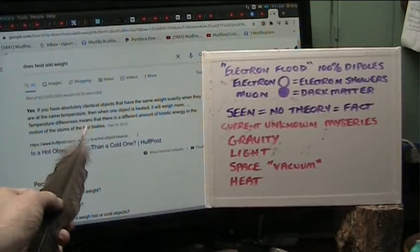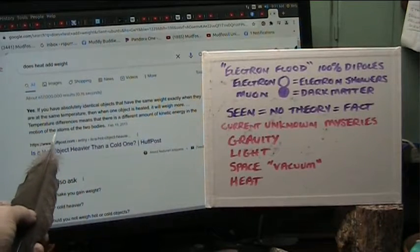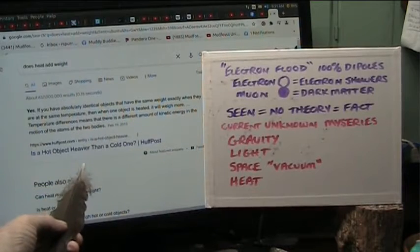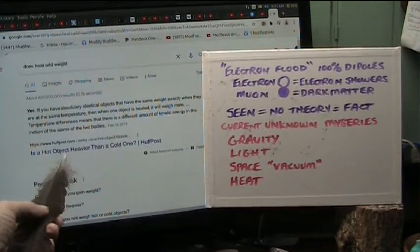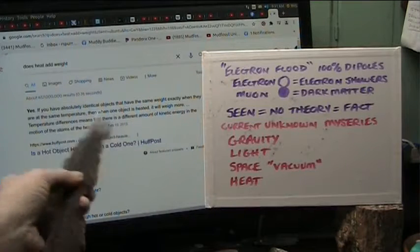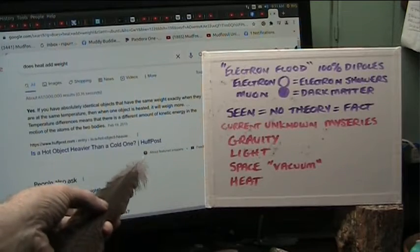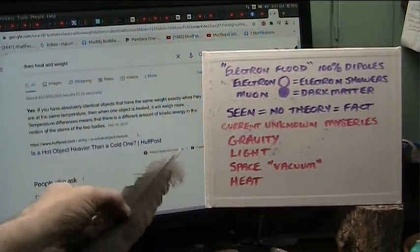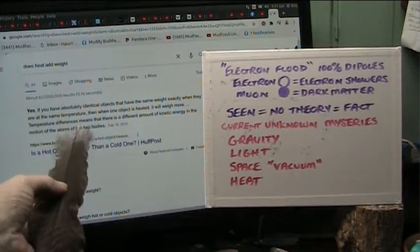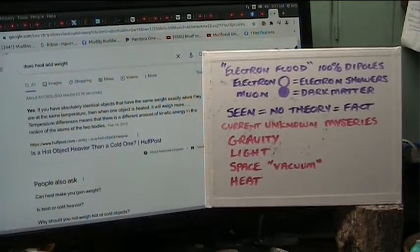Temperature differences means that there is a different amount of kinetic energy in the motion of the atoms of the two bodies. What does that mean? If there's the same number of atoms in the same bodies, then they shouldn't weigh the same. I don't care if they're bouncing around inside or not. If it's just sitting there, not moving and pumping up and down, how could it weigh more? What is the extra weight? Where does it come from?